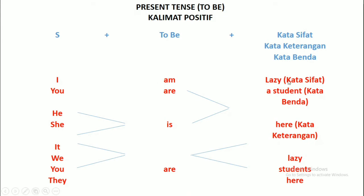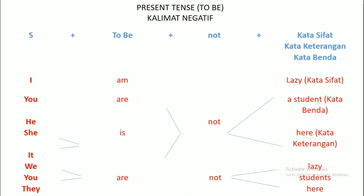I am lazy. You are student — kamu seorang pelajar. He is here — ya di sini. Kalau keterangan waktu ya, He is here. We are lazy — kami malas. You are lazy — kamu malas. They are here — mereka di sini. Jangan lupa ada dua you: you tunggal dan you banyak (plural).